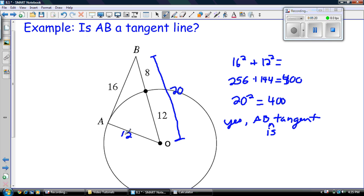So this question could have easily asked: is triangle ABO a right triangle? Exactly the same question. You use Pythagorean theorem, see if you've got a right angle at A. If you do, it's tangent. If you don't, it's not tangent. Simple as that. Pythagorean theorem.